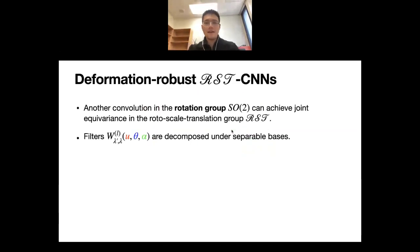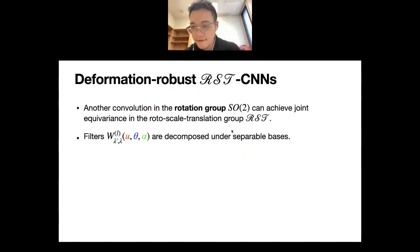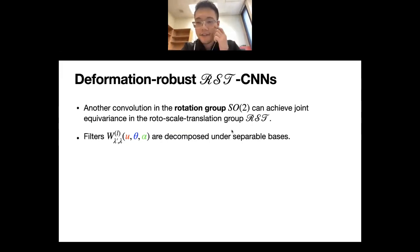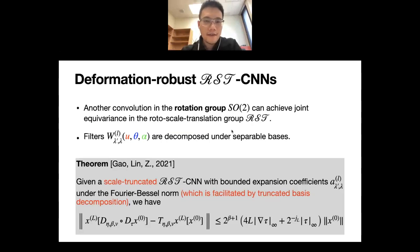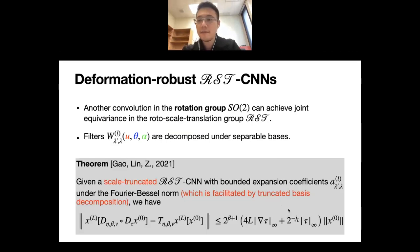This handles the scaling-translation group. If you also want rotation equivariance, you can build that in by doing a group convolution with respect to the rotation group as well. We can show that adding the rotation group still yields the same result: the diagram remains approximately commutative under small deformations.